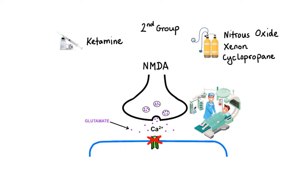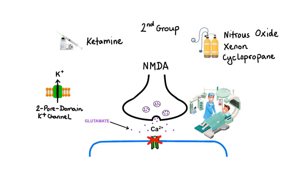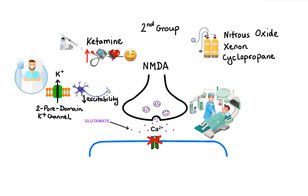Group 2 general anesthetics also affect members of the two-pore-domain potassium channel family, which regulate the resting membrane potential of neurons. Specifically, they promote the opening of these channels leading to increased potassium efflux, producing a reduction in neuronal excitability that contributes to their sedative effects. Regarding adverse effects: ketamine can cause hypertension, tachycardia and hypersalivation, as well as emergence phenomena ranging from vivid dreams to hallucinations and delirium that may continue for 24 hours after treatment. Nitrous oxide and cyclopropane are known to cause dizziness, nausea and vomiting. Xenon has many characteristics of the ideal anesthetic and has virtually no significant side effects.